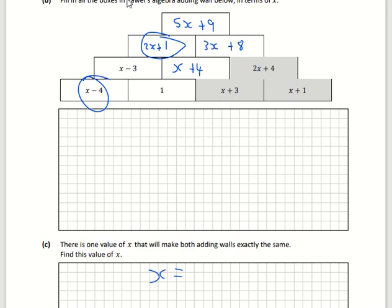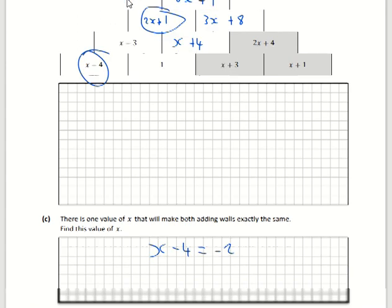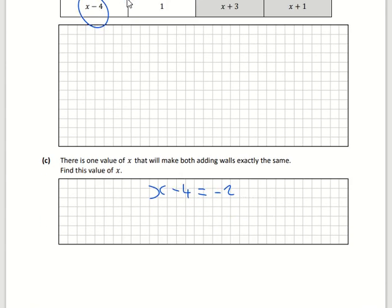So I can write that down. So if x minus 4 is equal to minus 2, then I could just move the minus 4 across the other side, or just think about it, x has to be equal to 2 there, because 2 minus 4 is equal to minus 2.